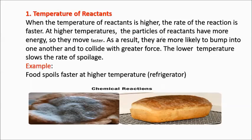At higher temperature, the particles of reactants have more energy so they move faster. As a result, they are more likely to bump into one another and to collide with greater force. Lower temperature slows the rate of spoilage — that's why you put spaghetti in the refrigerator. Food spoils faster at higher temperature. A refrigerator preserves food by lowering the temperature, thus lessening the reaction process.